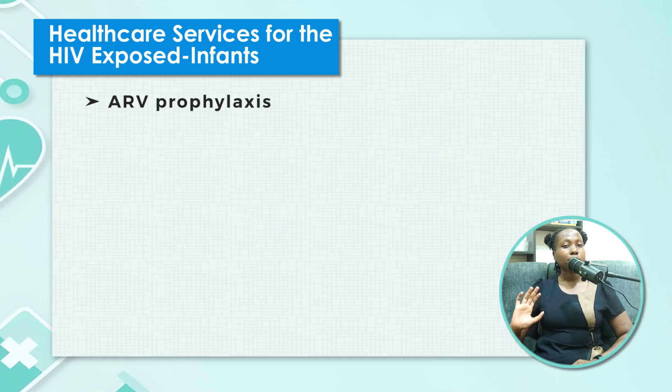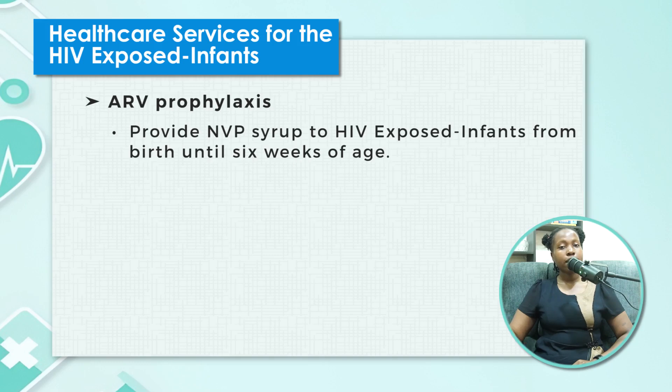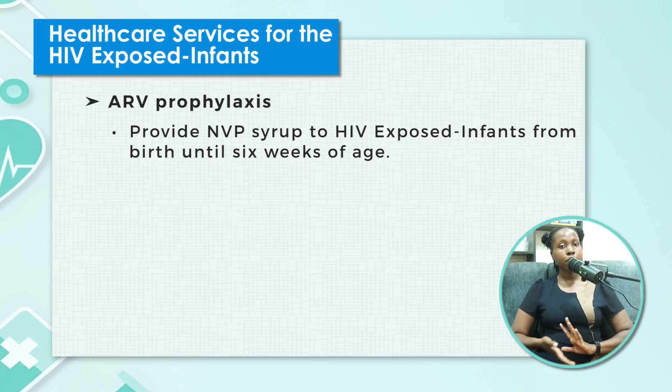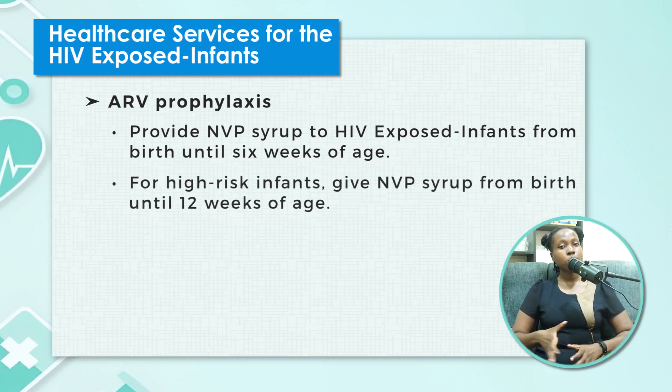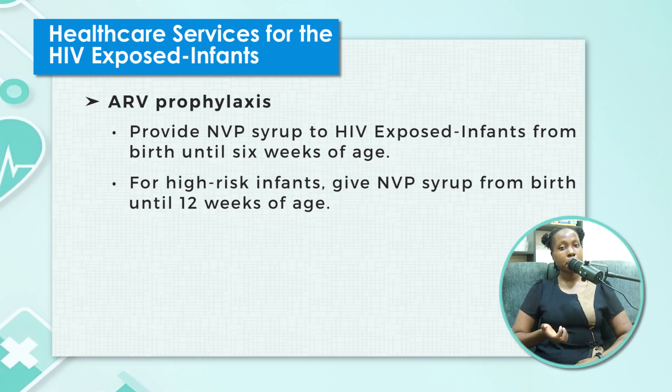For ARV prophylaxis, children are given nevirapine syrup to help suppress any infection that may come from the mother, and this syrup is taken for six weeks. The mother should be counseled about the importance of adherence so their child doesn't end up getting infected. In case a child falls under the high-risk category, they should take this syrup for up to 12 weeks to ensure a better outcome. If a child comes in within six weeks of birth, we start them on the syrup. If they come in after six weeks, we start them on first-line ART: tenofovir, lamivudine, and pediatric dolutegravir.